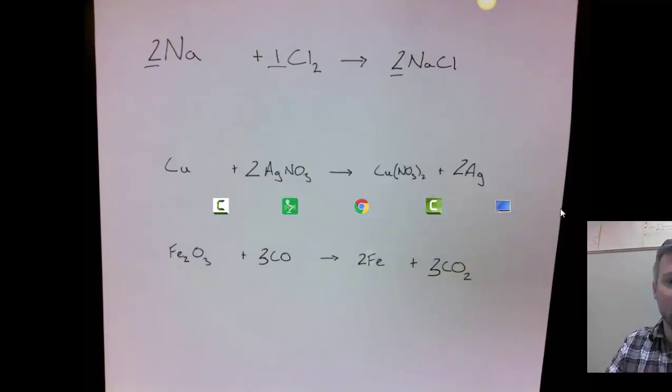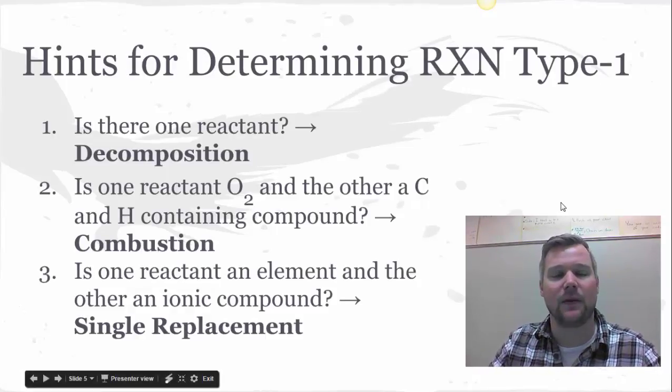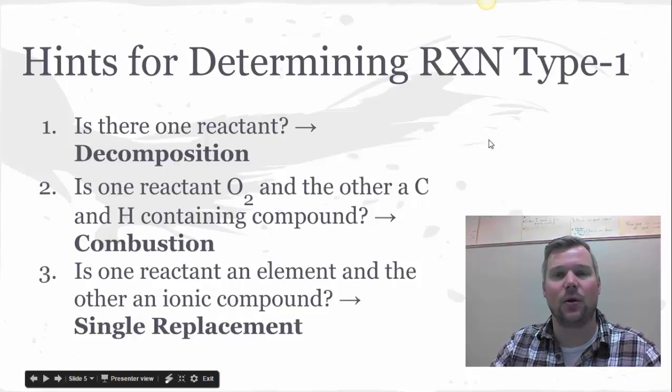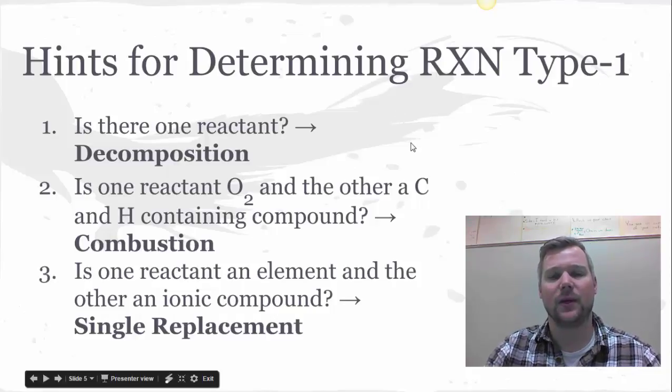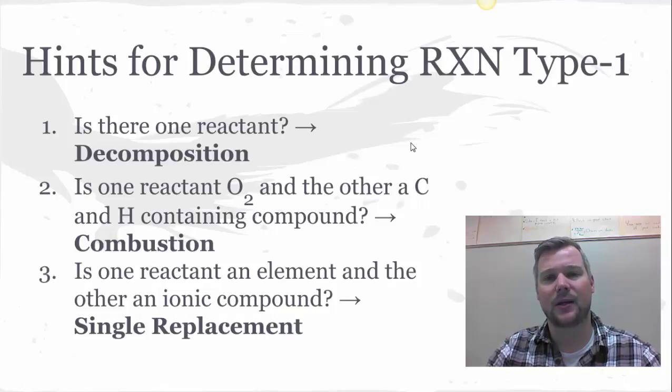Moving forward, the next part of our discussion is going to be hints for determining reaction type, and this is important because we're going to be looking at one or two or three reactants and we're going to decide what kind of reaction is going on here. You need to be able to do that just from what's on the left side of the arrow. So there's some patterns that we can use, and I put these questions that you're going to basically ask yourself in an order that I think it's easiest to observe based on complexity.